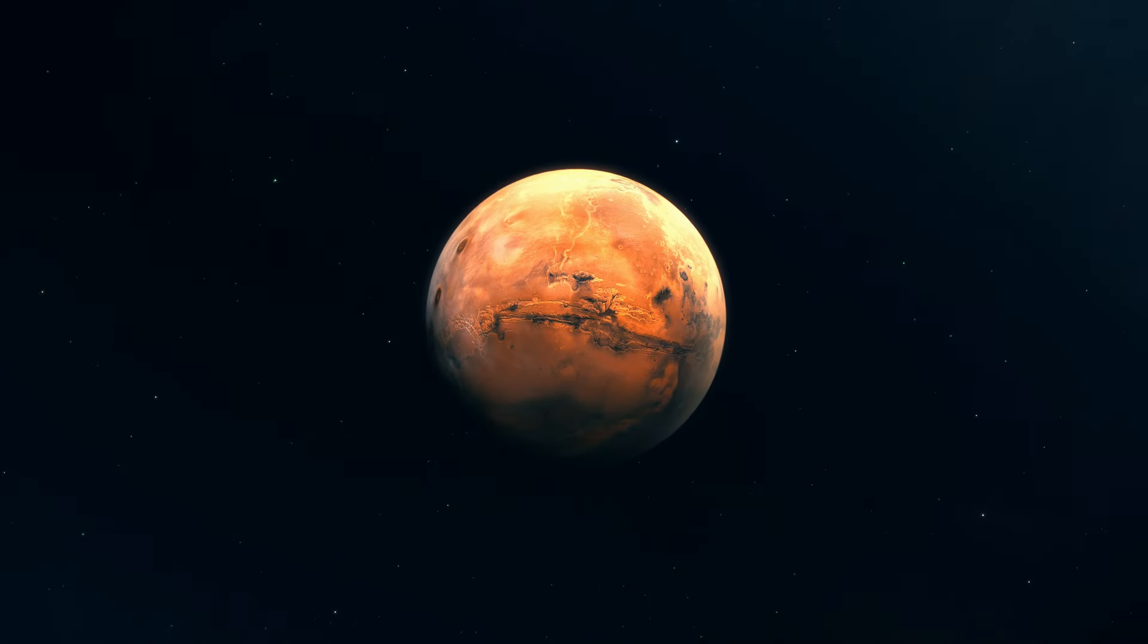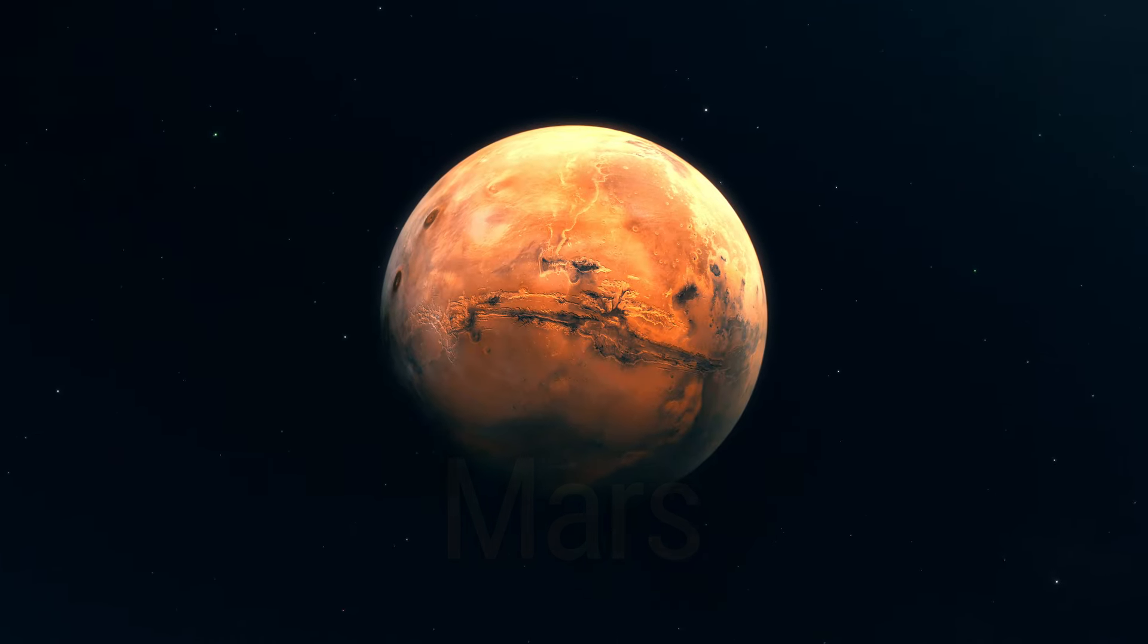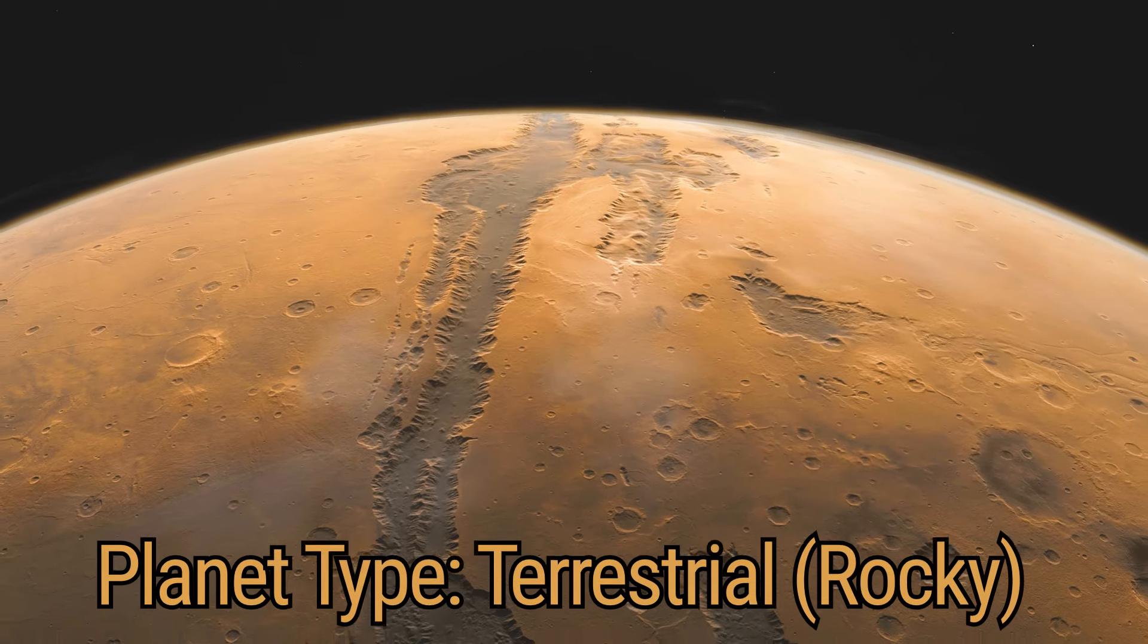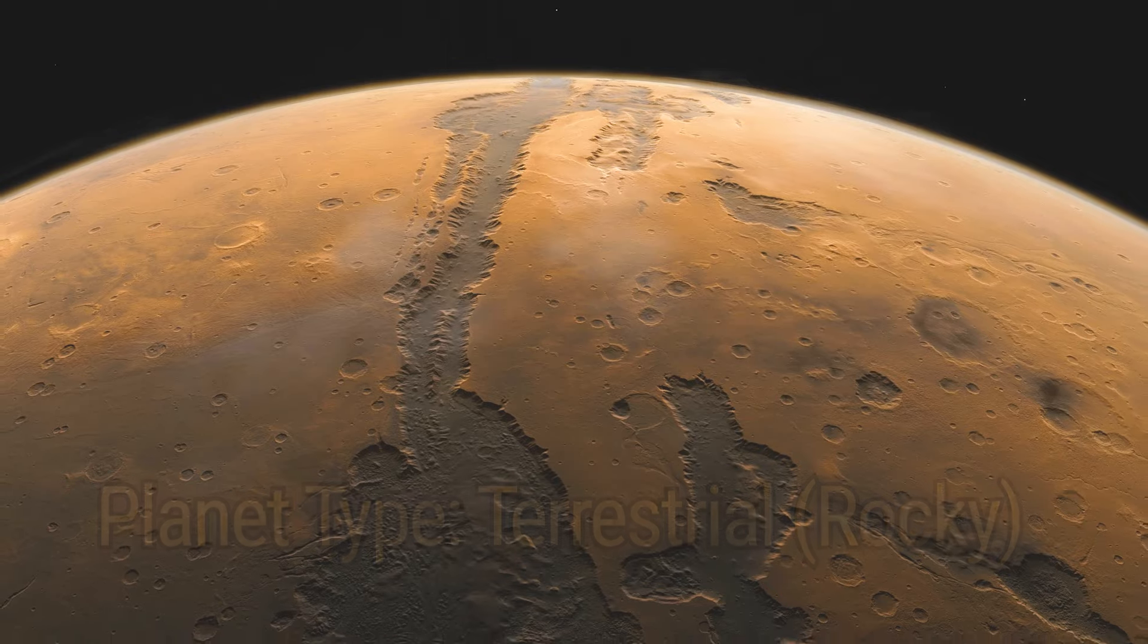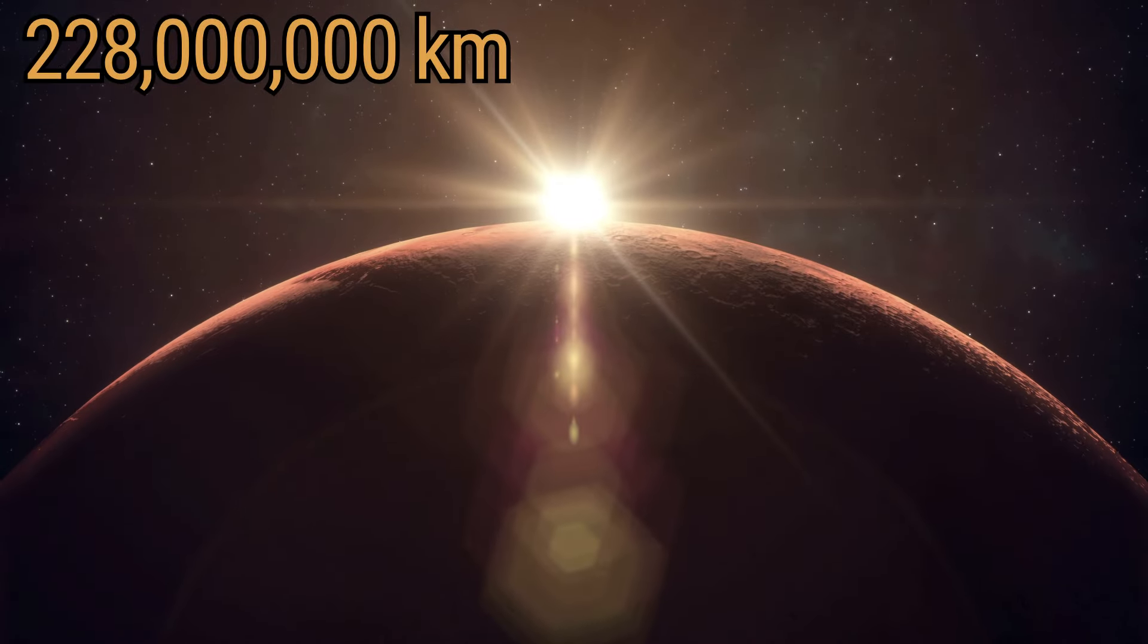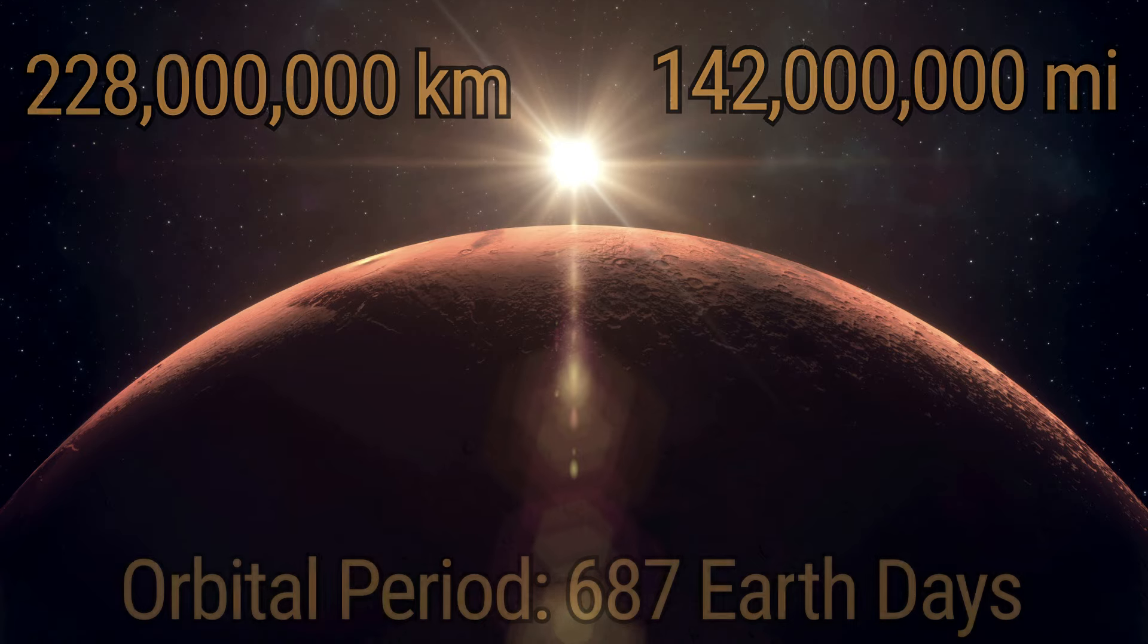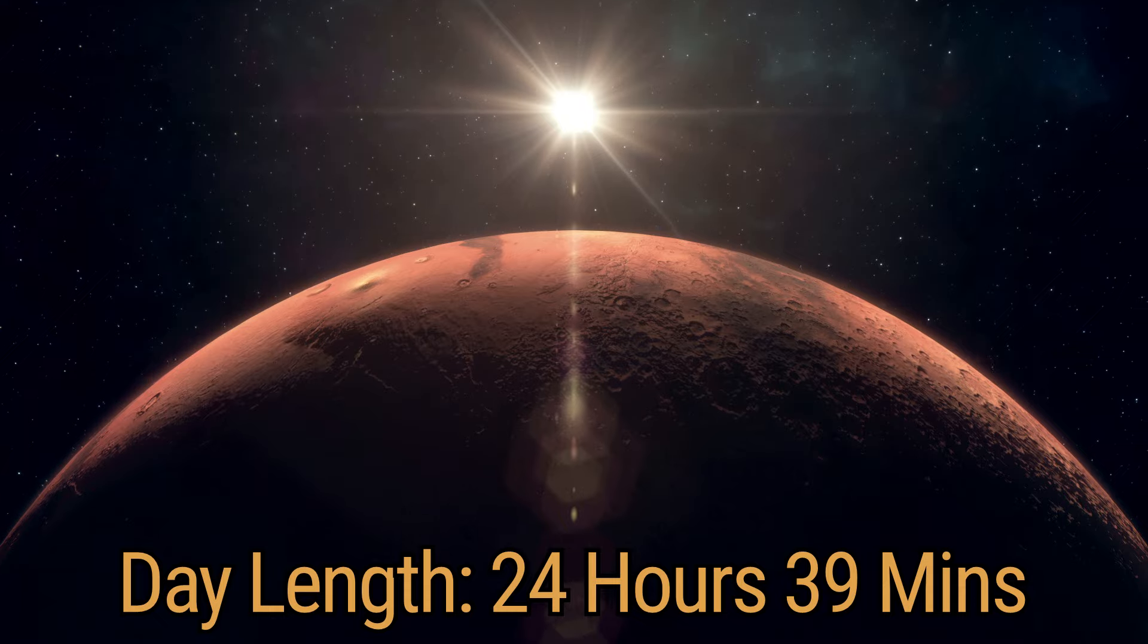Next, our journey takes us to Mars, the Red Planet, a beacon of exploration and wonder. Mars is the last of the terrestrial, or rocky planets, before we venture out to the giants. Mars is farther from the Sun, at an average distance of 228 million kilometers, or 142 million miles, with a year lasting 687 Earth days and a day just over 24 hours.